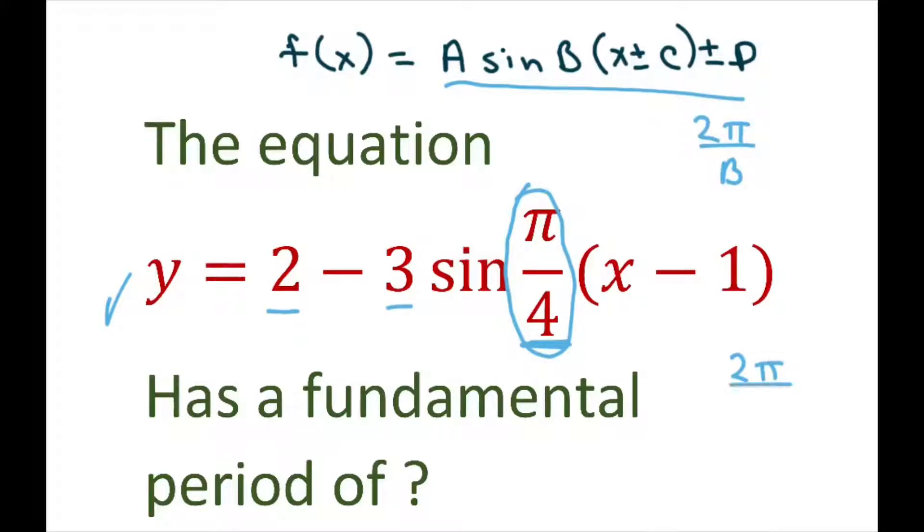So you have 2π divided by π/4, which is 2π times 4 over π, and that equals 8.